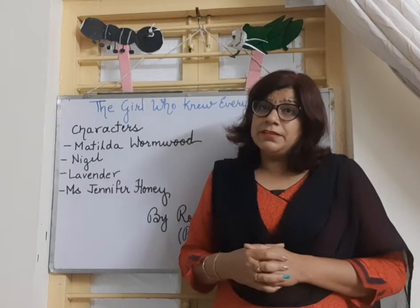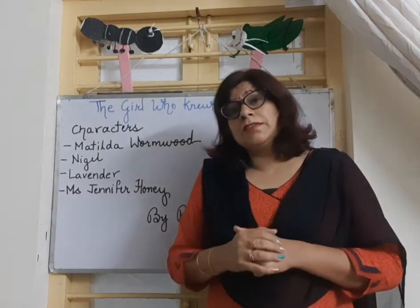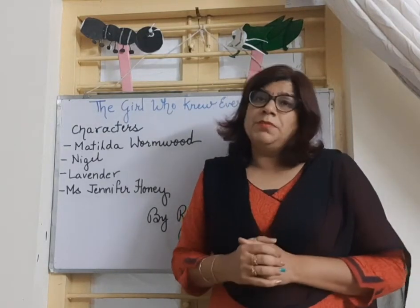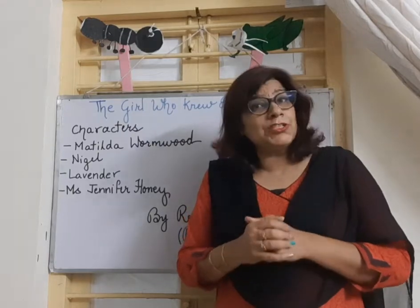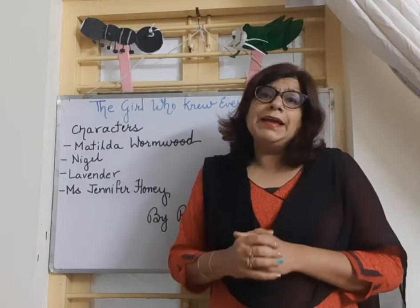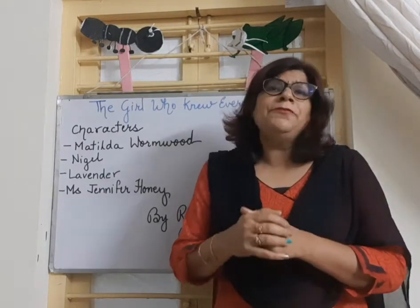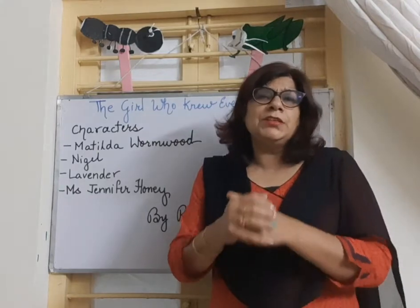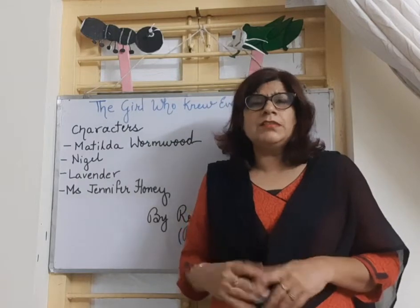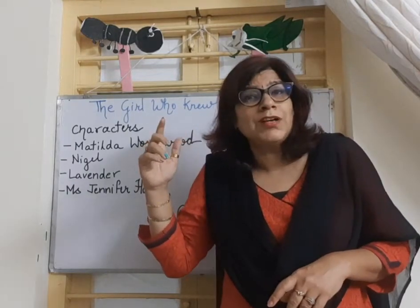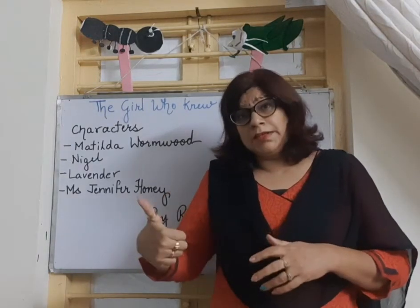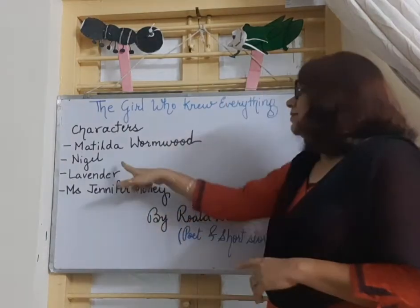When Miss Honey enters the class, she decides she will ask the children a few questions and then test Matilda further. She stops the children from doing the sums they were doing and asks them to spell a few words. The first word she gives is 'cat', and immediately three children raise their hands — just like you all raise your hands — and those three were Matilda, Lavender, and Nigel.